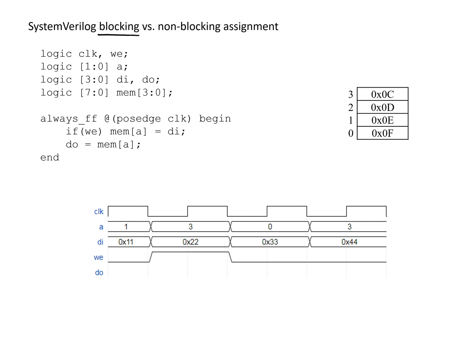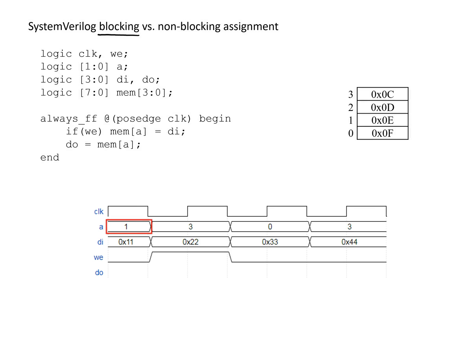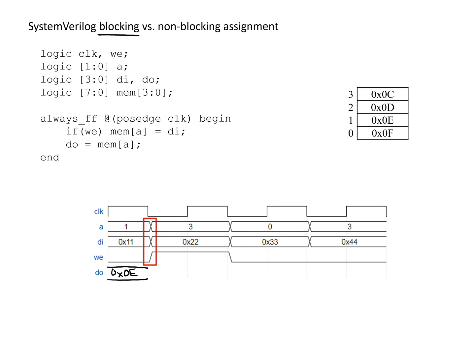The blocking operator tends to behave more like what most people are used to if you've had experience with programming — things appear to happen in sequence. Starting at the very beginning of the waveform, our address is 1. The write enable is 0, so we're not writing anything. The only line that matters is dout = mem[A]. If we look at address 1 in our array, that has a value of 0x0e, so the data out would take on that value. Because this is in an always block that only triggers on the positive edge of the clock, nothing will happen to the output until the next positive edge, even though address and data in change in the middle of the clock.